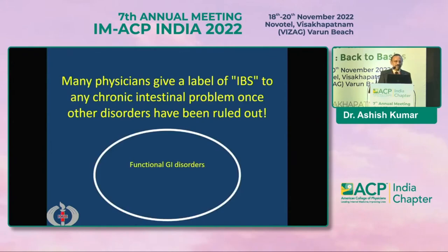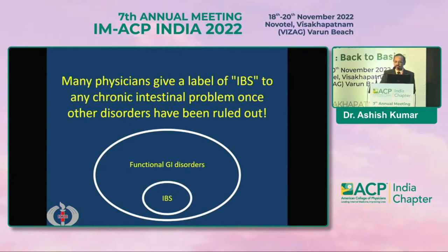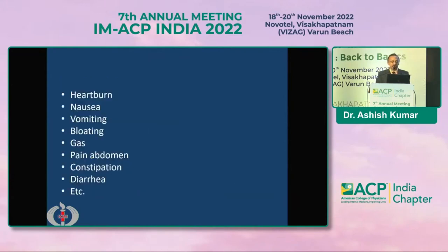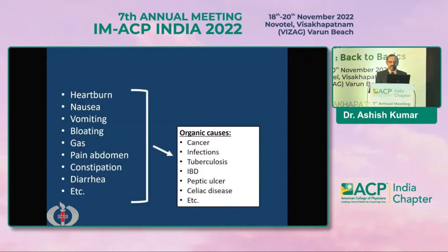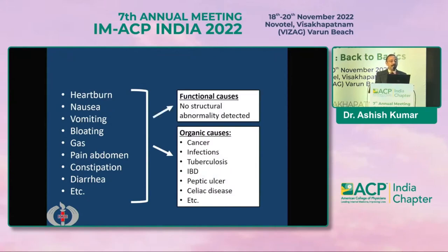But this is not IBS. In fact, there is a big lot of GI disorders which are known as functional GI disorders, and IBS is a subset of disorder among the functional GI disorders. Many patients will come with either heartburn, nausea, vomiting, bloating, gas, pain abdomen, constipation, or diarrhea. And there are many organic causes for these including cancer, infection, tuberculosis, IBD — inflammatory bowel disease — and peptic ulcer. But once you have ruled out all this and there are no structural abnormalities, then you would label them as functional cause of these symptoms.